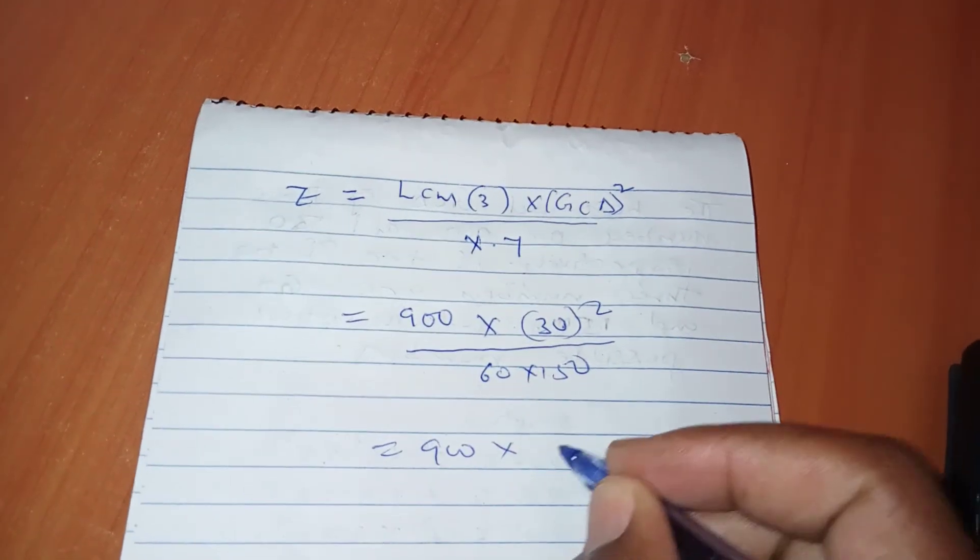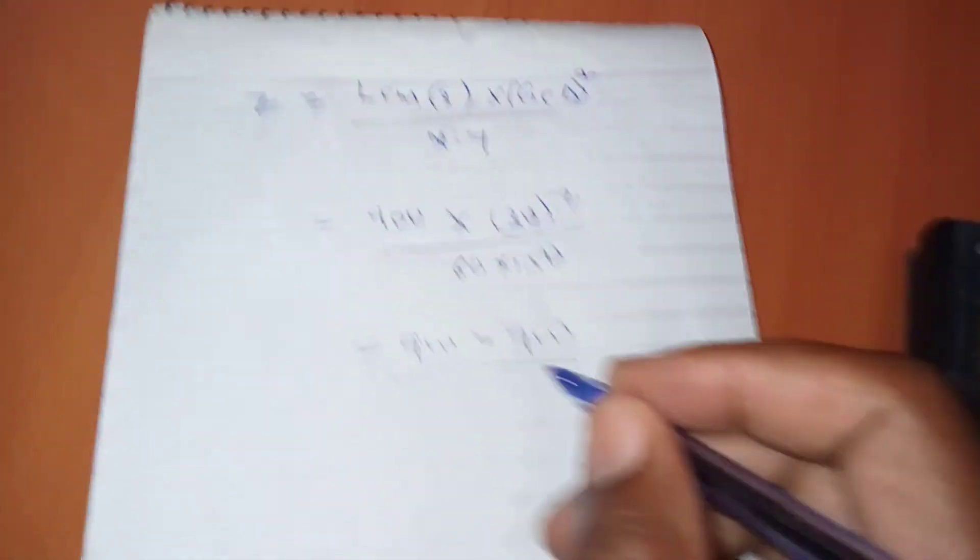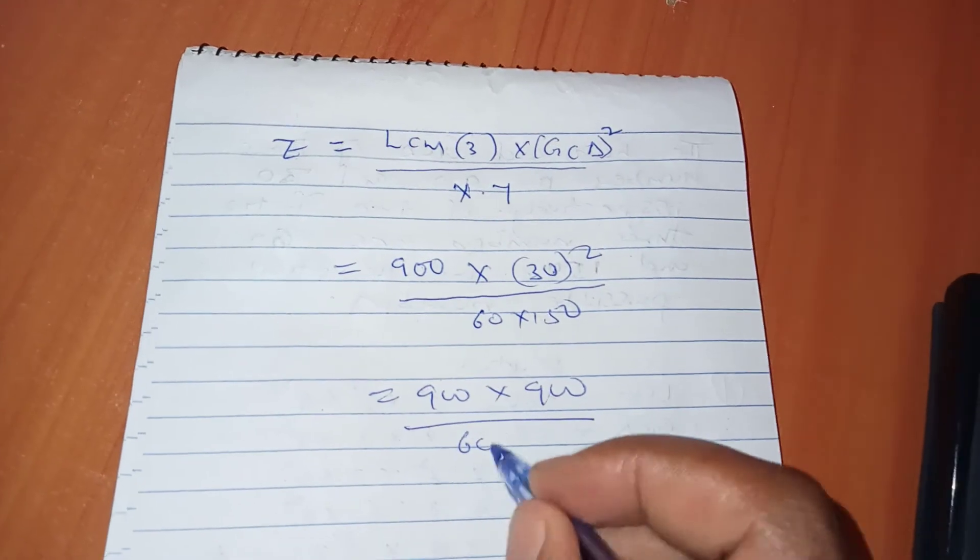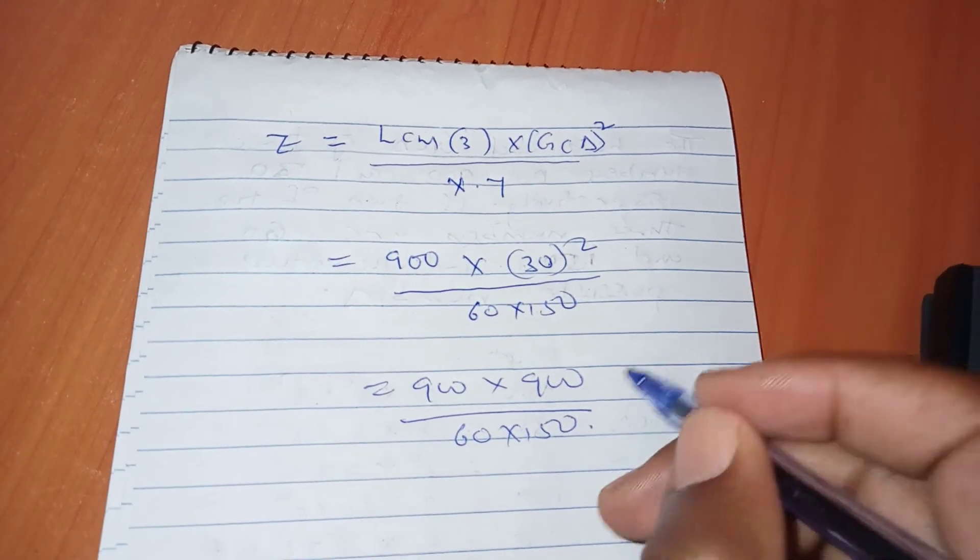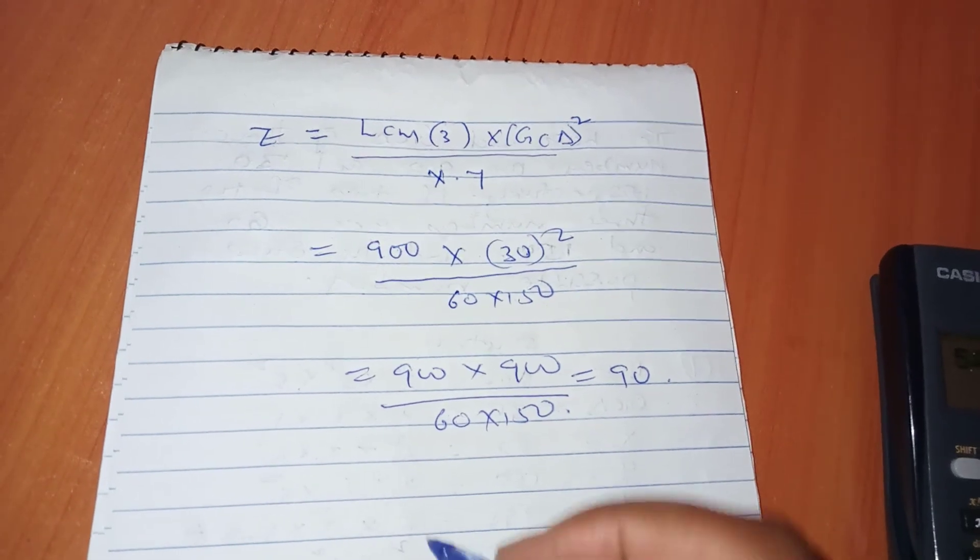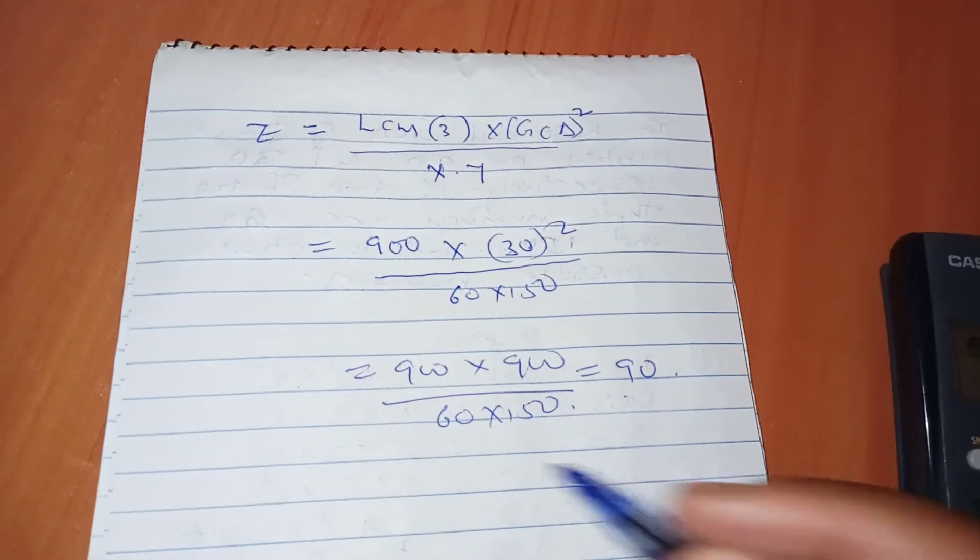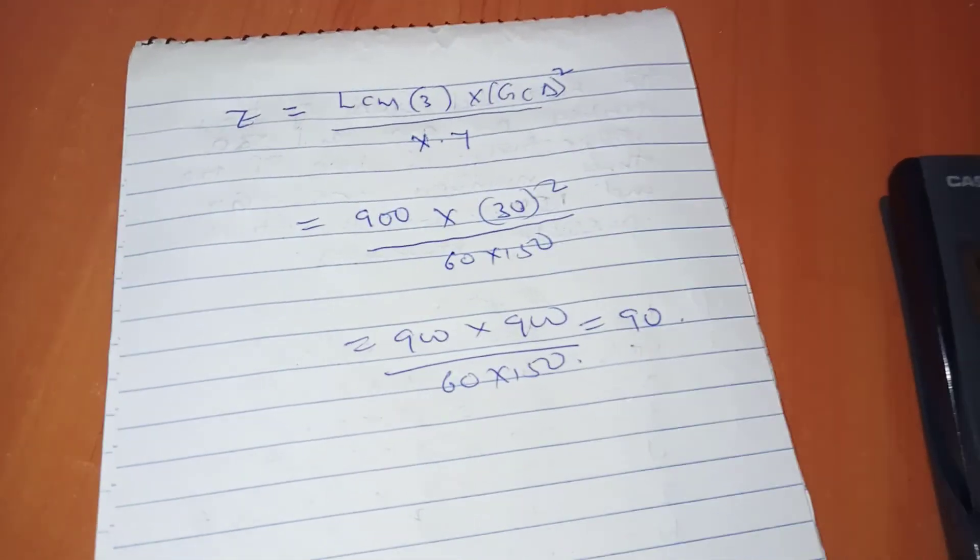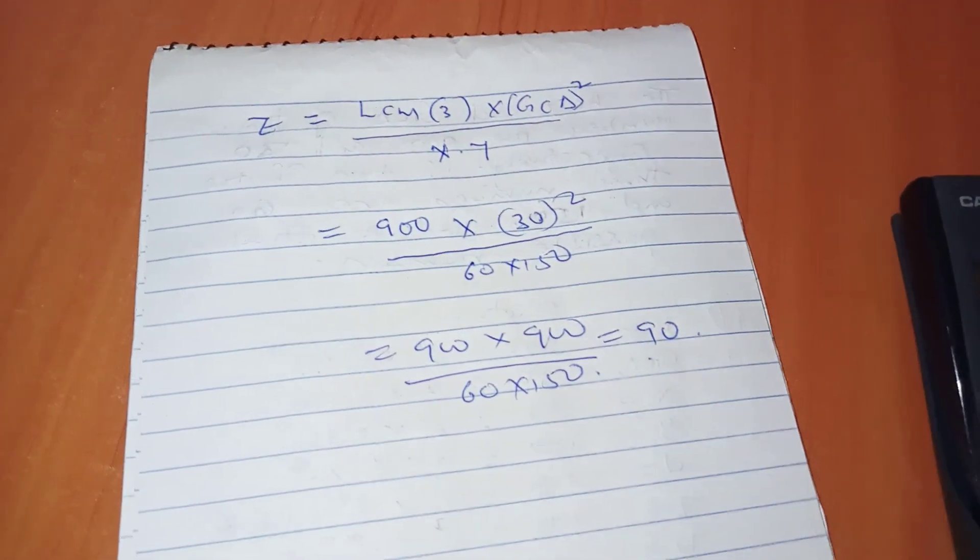This is 900 × 900 divided by 60 × 150. This is also 90. If you simplify, the answer is 90. Those are the two handy ways of solving that problem.